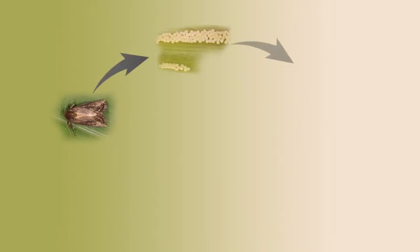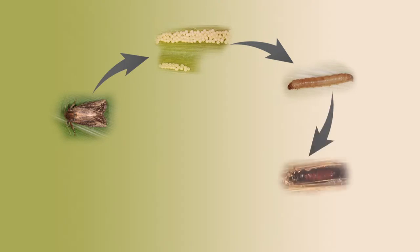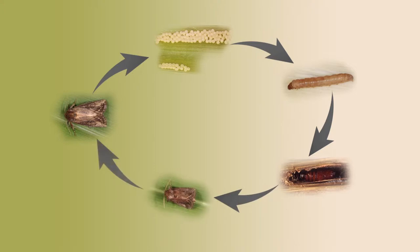Insects have specific life cycles and can change form in each phase. Adult stalk borers, for instance, lay eggs which overwinter in the grasses. Once the worms or larvae emerge, they gradually move to other hosts like maize. The adult larvae then pupate in the stalk and emerge again as moths.